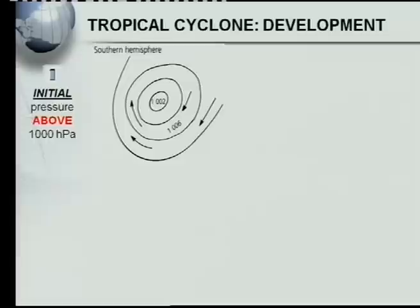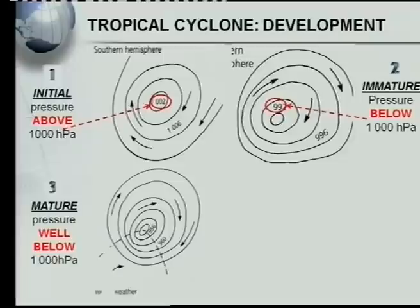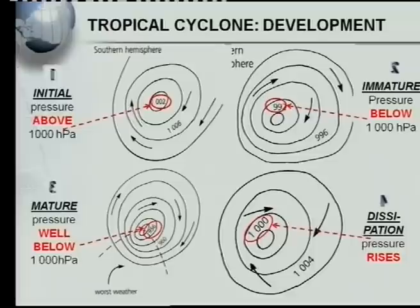In the initial stage, pressure is above a thousand hectopascals — currently showing 1002 hPa. In the following stage, the immature stage, the pressure has dropped to below a thousand hectopascals — you can see 992 hPa there. In the mature stage it is far below a thousand hectopascals — in this case 956 hPa and even lower. Then in the dissipation stage the pressure starts to rise again back to around a thousand hectopascals.